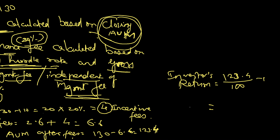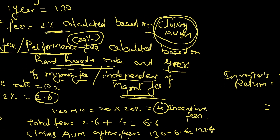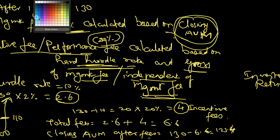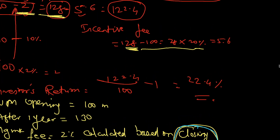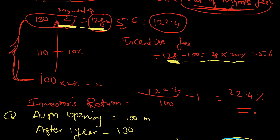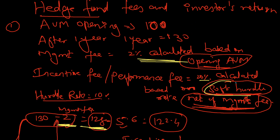Investor's return: 123.4 divided by 100, minus 1 comes to 23.4%. So these are different ways to calculate hedge fund fees. The key words you need to focus on are: independent of management fee, gross of management fee, hard hurdle rate, calculated based on closing assets under management, soft hurdle rate, net of management fee, and opening assets under management. Thank you.